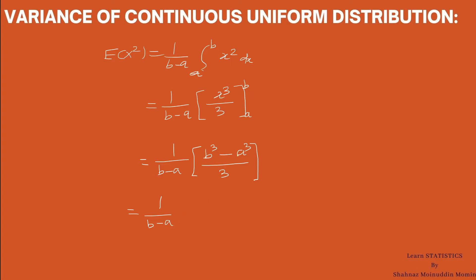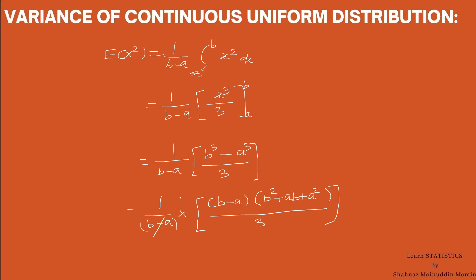We factorize the numerator b cubed minus a cubed as (b minus a)(b² plus ab plus a²) divided by 3. The factor (b minus a) in the denominator cancels with the factor (b minus a) in the numerator. Hence, E(x²) equals (b² plus ab plus a²) divided by 3.